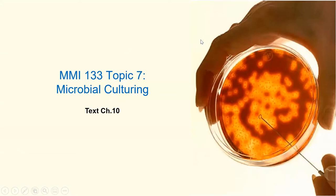So let's get into things. Topics 7, 8, 9, and 10 — we're going to talk about culturing microbes, identifying microbes, and how we can kill them. We're going to talk about things like disinfectants, antibiotics, antivirals, and those kinds of things.